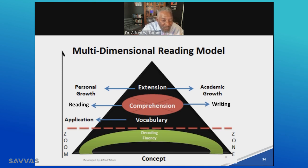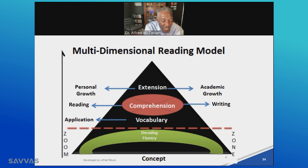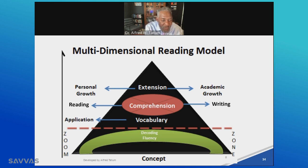Every lesson should focus on this multi-dimensional reading model. All my students read and write across two texts and two topics every single lesson. That was the larger marble I was using to give it more force. I pay attention to their concept of reading, give them fluency instruction, am explicit with decoding, have them apply vocabulary, assess their comprehension of both reading and writing, and focus on personal and academic growth.